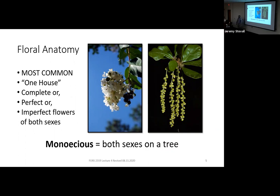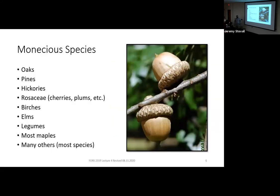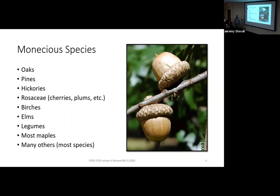Many forest trees have imperfect flowers — separate male and female flowers — but that tree will have both on the same tree, which is another way a tree can be monoecious. Almost all the trees we're doing this semester in lab are going to be monoecious. All the oaks, pines, hickories, members of the Rosaceae — the rose family with fruit trees like plums and cherries — birches, elms, and lagoons are monoecious. Most of our maples, but not all. So if you have to guess whether a lab tree is monoecious, it probably is.